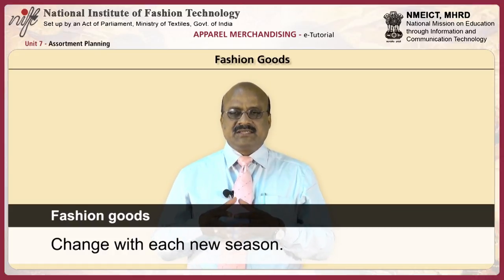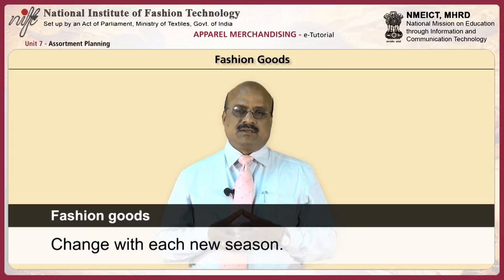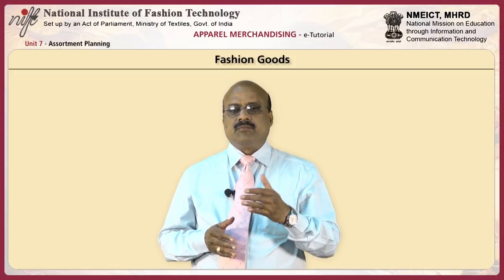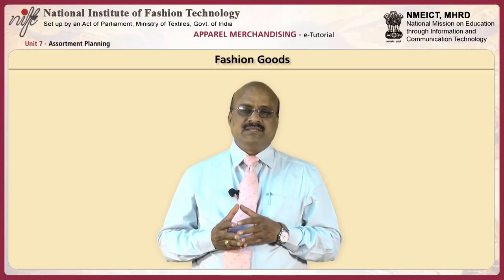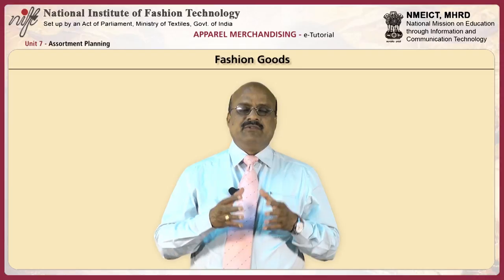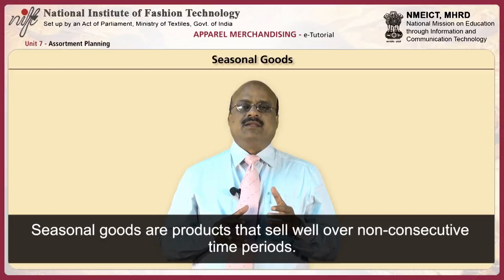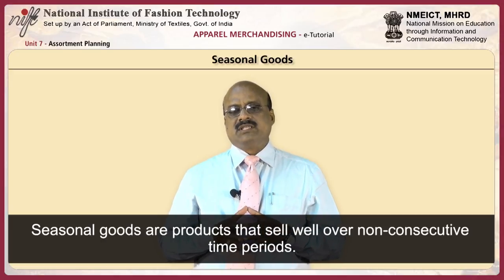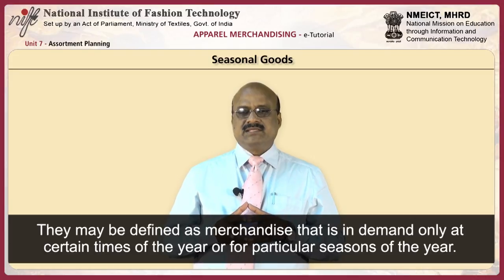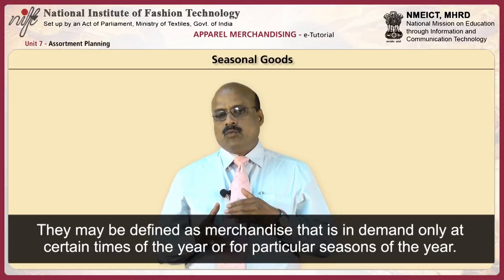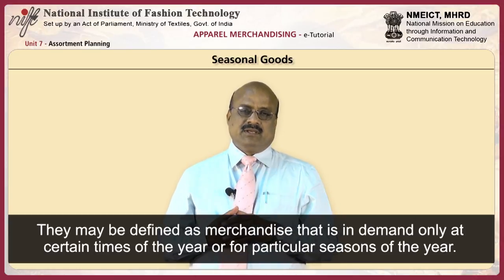Fashion apparel and accessories change with each new season — every 3-4 months — while the buyer of hard goods will have two market seasons, one every 6 months. Seasonal goods are products that sell well over non-consecutive time periods, defined as merchandise in demand only at certain times of the year or for a particular season.